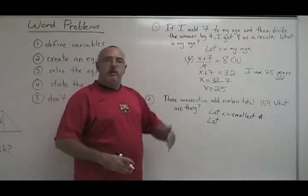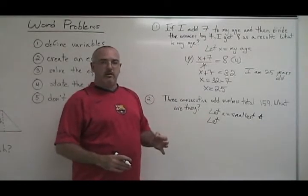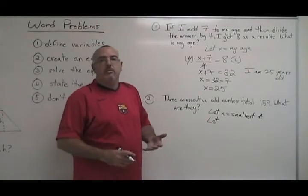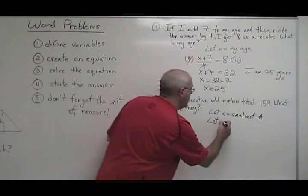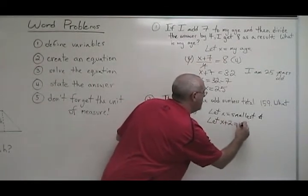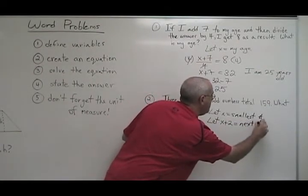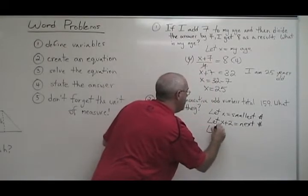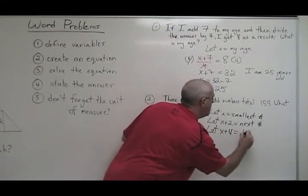Consecutive odd numbers go up by 2. If x is my smallest odd number, the next consecutive odd number will be x plus 2. So I say, let x plus 2 equal the next number, and let x plus 4 equal the last one.